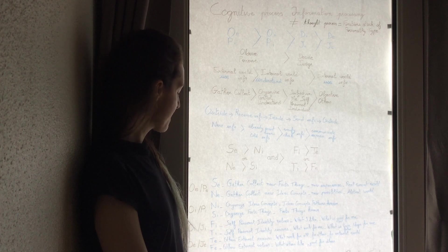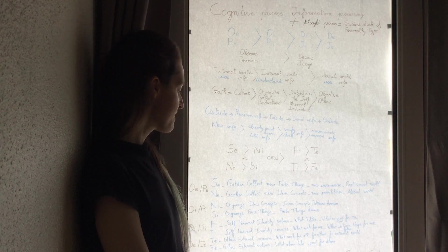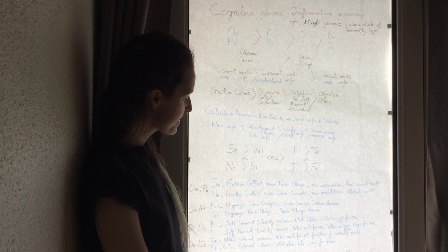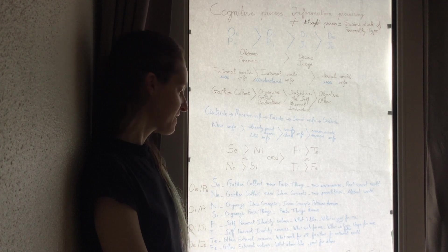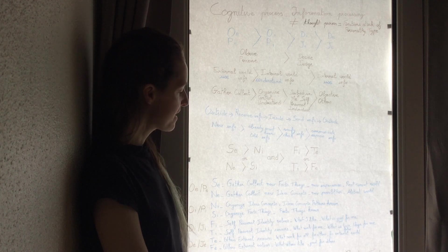The observing, perceiving introverted function, Ni, is organize the ideas, concepts, patterns, and nodes. Si is organize the facts, the things known.